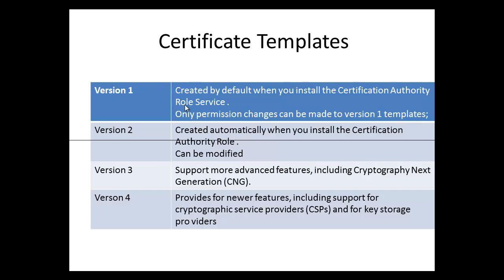Let's take a look at version 1. Version 1 template is created when you install the Certification Authority role service, and the only changes that you can make to this version would be the permissions. Version 2 is also created automatically when you install the Certification Authority role.